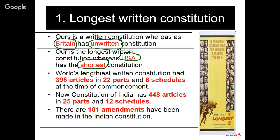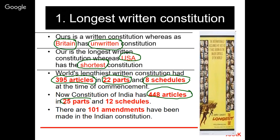How long is our constitution? At the time of writing, it had 395 articles in 22 parts under 8 schedules. Over the years, amendments were incorporated, and by 2017 the constitution has 448 articles in 25 parts under 12 schedules. A number of amendments have taken place; the last was the 101st amendment, done to introduce the GST — Goods and Services Tax Act.